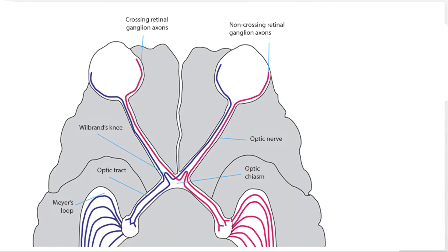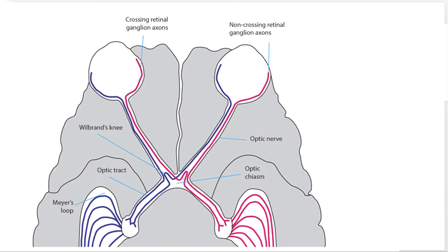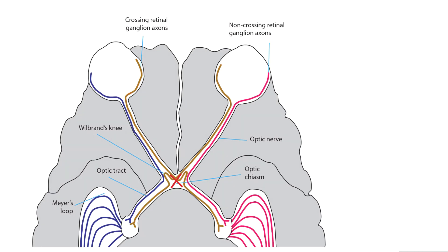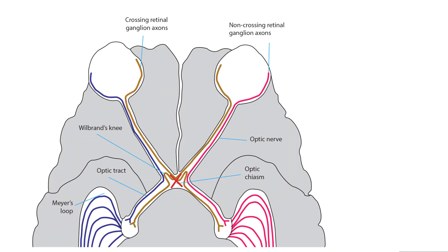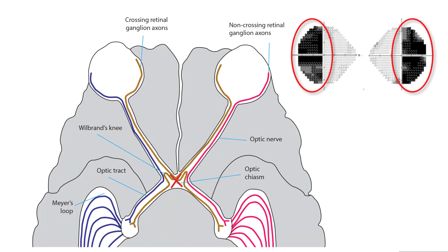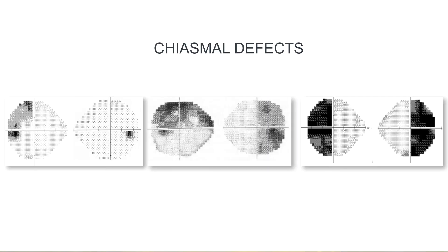A lesion that affects the optic chiasm itself, whether intrinsically or extrinsically, primarily damages its crossing fibers that originate in the nasal retina of both eyes. For that reason, a lesion here causes a bitemporal hemianopia.